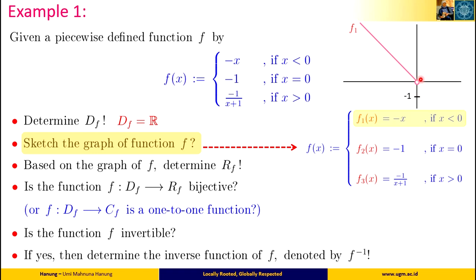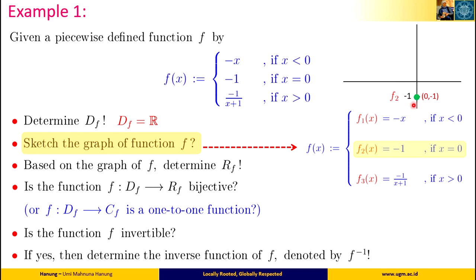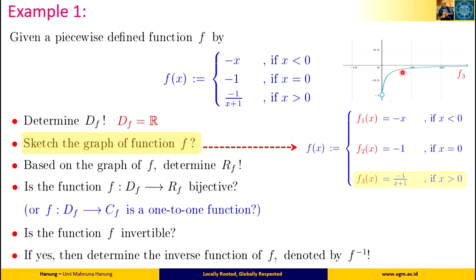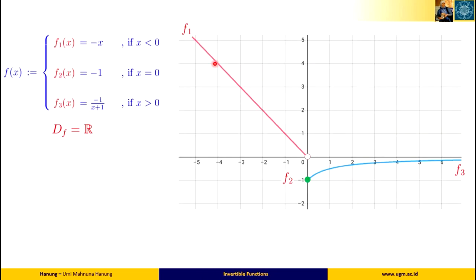At the coordinate (0, 0) there is an open circle or hollow dot, because x equals 0 is not included in this open interval. But when x is exactly 0, it gives minus 1 as the value of f2. So the graph of f2 is a single dot at coordinate (0, minus 1). When x is greater than 0, f3(x) equals minus 1 over x plus 1, whose graph is shown in front of us. The graphs of f1, f2, and f3 are sketched together on the same Cartesian coordinate system, giving the full graph of function f.